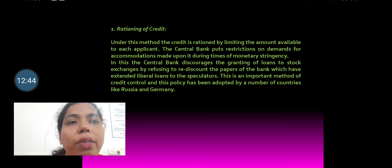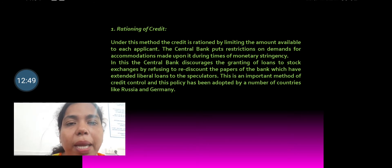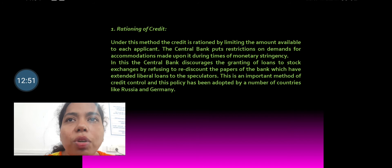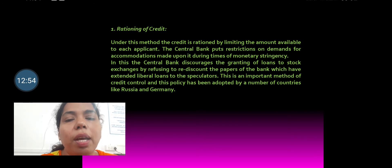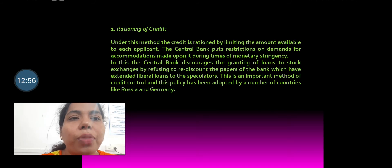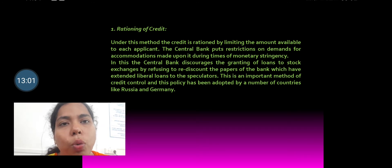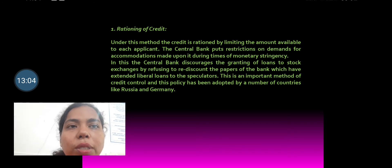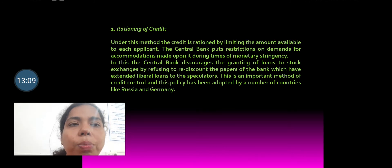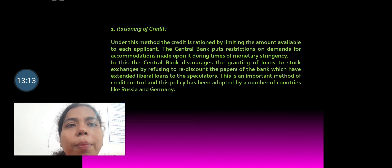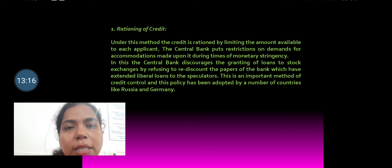The first qualitative method is rationing of credit. Under rationing of credit, the credit is rationed by the central bank — a specific amount of credit can be granted to the commercial banks so that their ability to grant loans is reduced. The credit is rationed by limiting the amount available to each applicant. The central bank puts restrictions on demands for accommodation during times of monetary contingency.